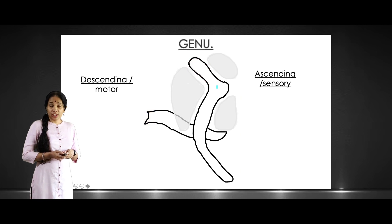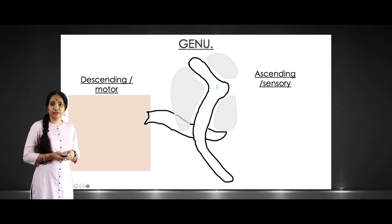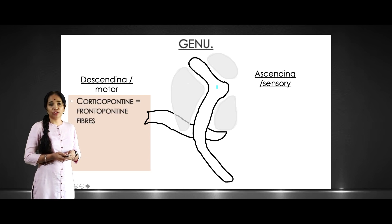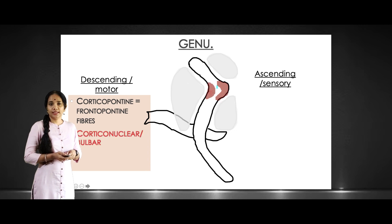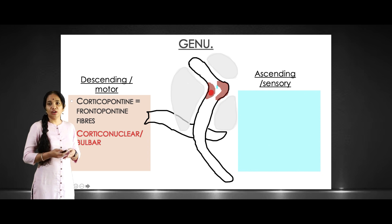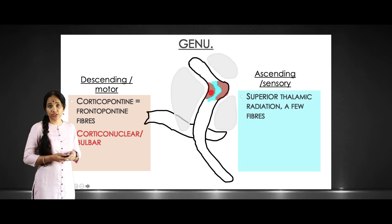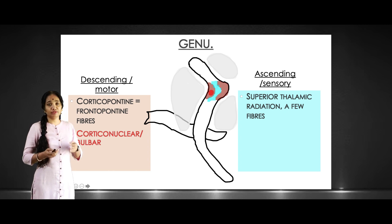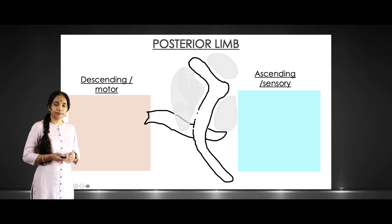Coming to the genu — not the posterior limb — the genu has descending fibers: again corticopontine or frontopontine fibers, as well as the corticonuclear fibers, also called corticobulbar fibers, which supply the head and neck. The ascending pathway consists of the beginning of the superior thalamic radiation, with just a few fibers starting to pass through the genu, because the rest of the fibers pass through the posterior limb.